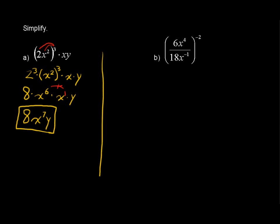Okay, on to the next one. 6x to the fourth over 18x to the negative 1, all raised to the negative 2. Okay, there's a few things going on here, but we just take it step by step.